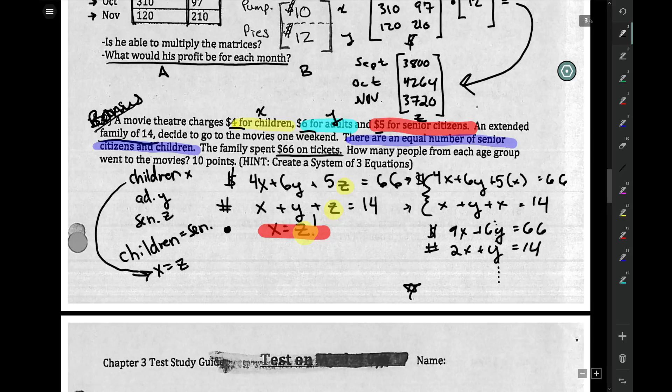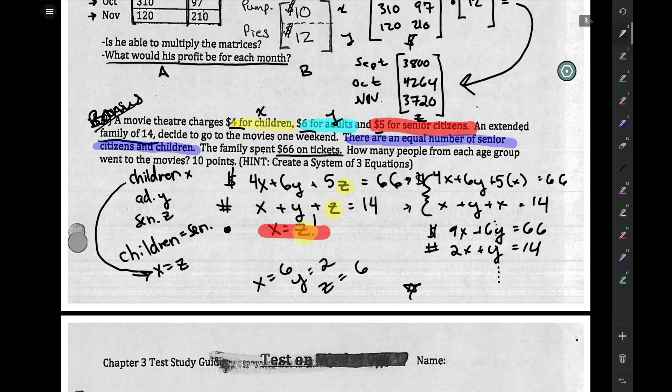To solve that any way you like, you should have x, or children, would be 6. Y, which are adults, would be 2. And z, which are seniors, should also be 6. So they're really, I promise, not all that challenging.